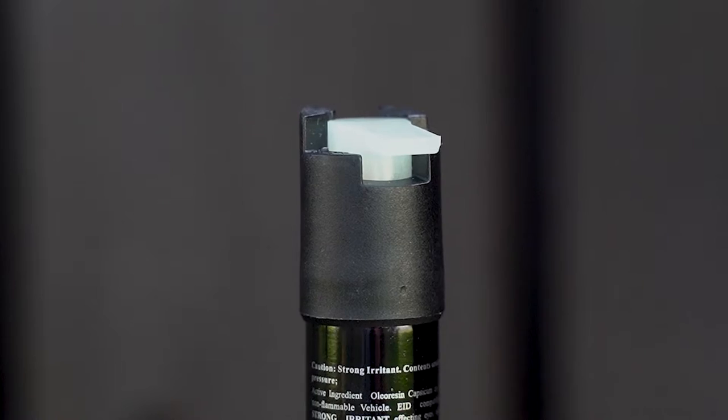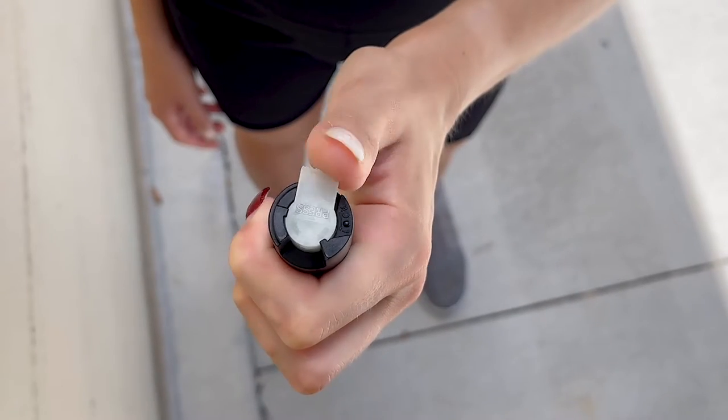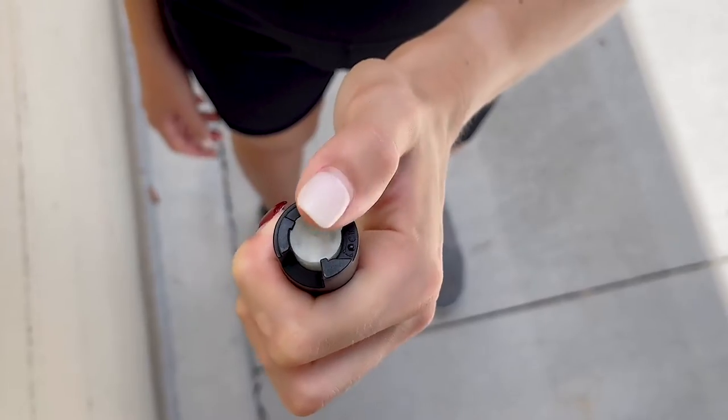The twist safety lock is simple to use, just twist to the side to lock and twist to the center to open and press down to fire.